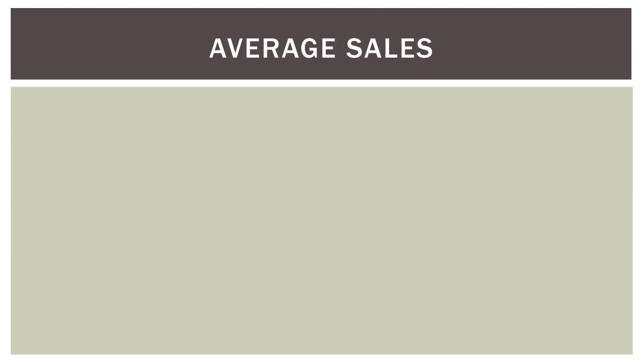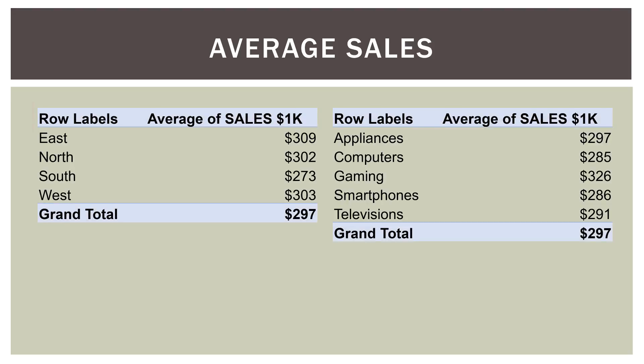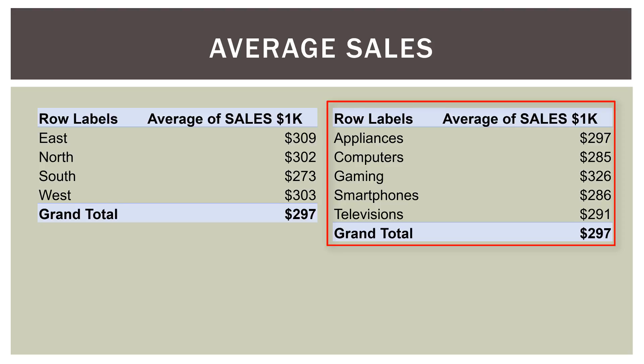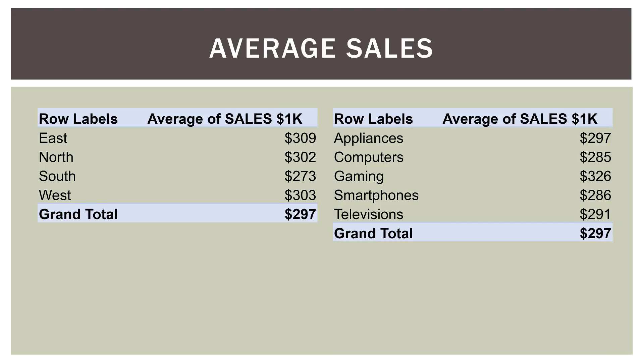The great thing about cross tabs is that they're extremely flexible. In the previous slide we looked at total sales; now we'll look at average sales. For all 100 observations, the east region had average sales of $309,000, the north $302,000, et cetera. Overall, the average sales per observation was $297,000. Broken out by segment, appliances averaged $297,000 and computers $285,000, but the grand total average sales per observation was the same $297,000.